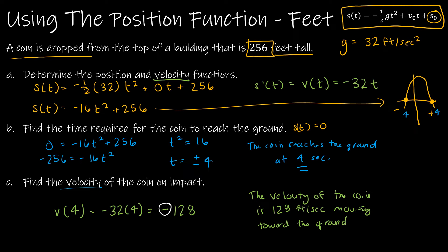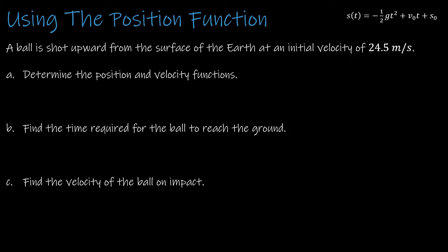When dealing with velocity, the negative sign just tells us the direction — whether the velocity is moving upward or downward. I have a similar question for you to try. The only difference is we'll use meters per second, so for g we'll use 9.8 instead. Press pause and try the question, then press play to see how you did.